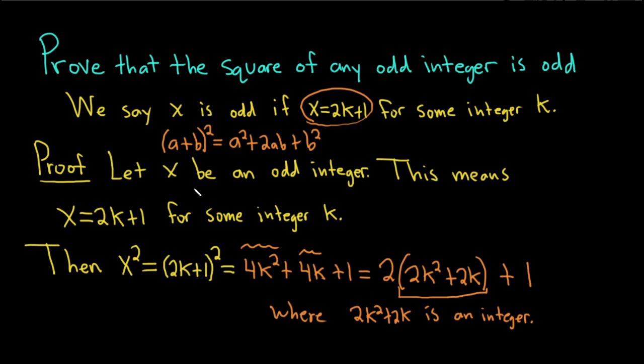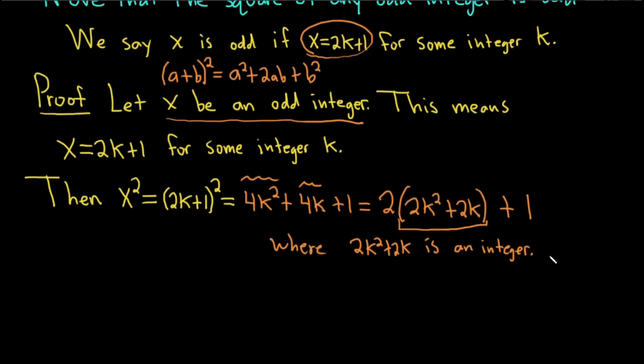So we've shown that whenever x is an odd integer, x squared is also an integer. So then you would just simply say, x squared is odd. And then that finishes the proof. I hope this video has been helpful. Good luck.